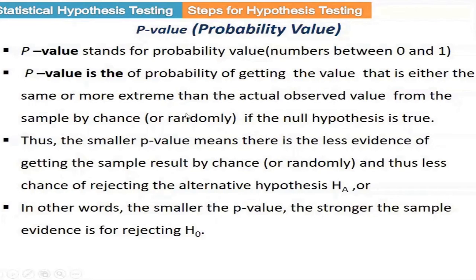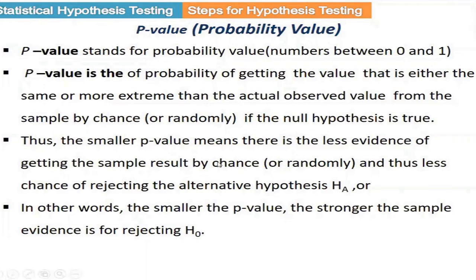If the null hypothesis is true, what is the chance you are making a mistake? That is the p-value. Less p-value means less chance of making that mistake, so there is less chance to accept the null hypothesis and more chance to reject it. A smaller p-value is stronger evidence for rejecting the null hypothesis.